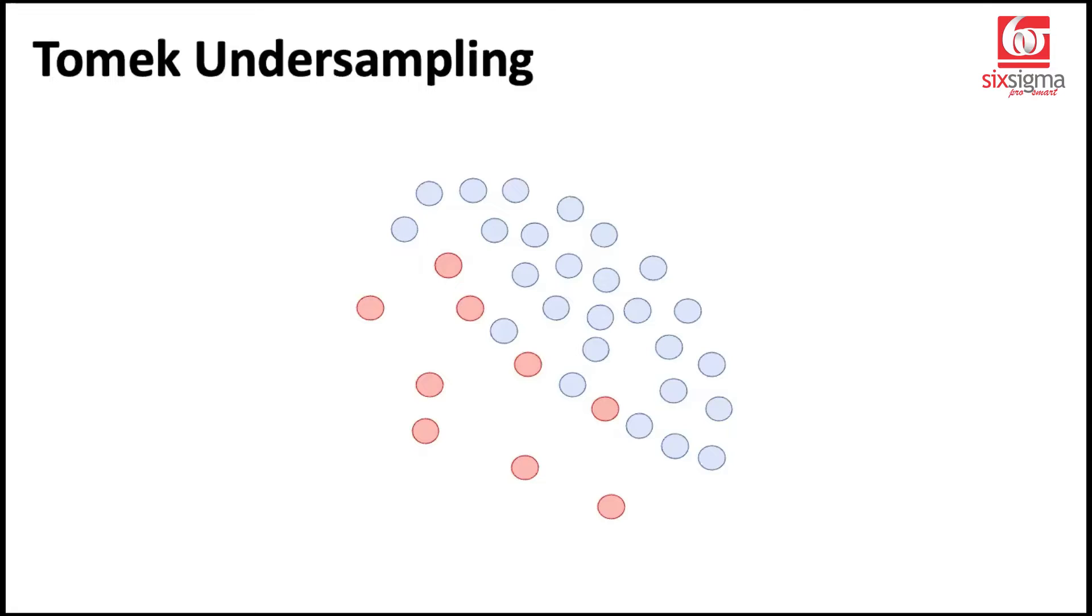When we do it in code, there are different options to drop more observations as well. But this was just an example to show that this is the logic that works. So the majority class observations are being dropped, not randomly, but based on the proximity to the minority class observations in a step.